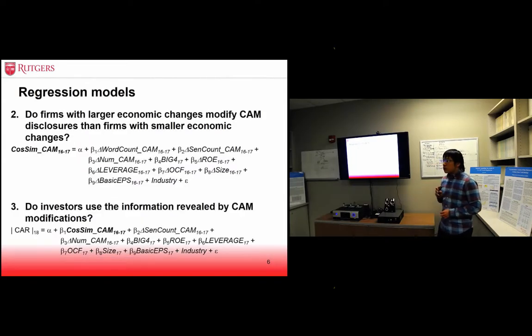I set two regression models to fit my second and third research questions. Following prior literature, I choose five basic financial ratios to measure firm's economic changes. I also control for the change of word count and sentence count and the number of CAM disclosures in auditors reports.